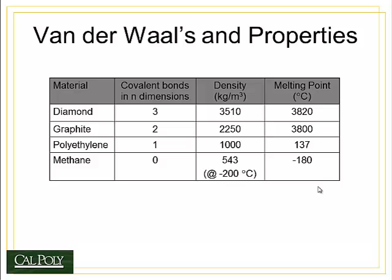Lastly, methane involves one carbon atom bonded to four hydrogen atoms, so there are no covalent bonds between carbon atoms. As a result, it has very low density and an even lower melting point than polyethylene, turning to gas at room temperature.